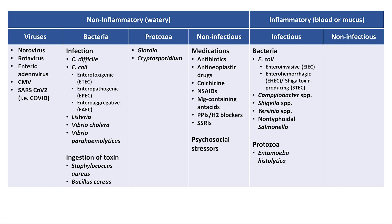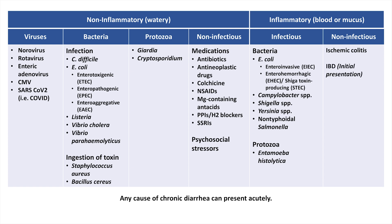Regarding non-infectious inflammatory diarrhea, a relatively uncommon but important cause in hospital medicine is ischemic colitis. It is worth noting that any cause of chronic diarrhea can present acutely, so the entire list of etiologies for chronic diarrhea could be considered as well. However, most causes of chronic diarrhea typically have a gradual onset, such as with most malabsorption syndromes, whereas a relatively rapid onset can be seen with a first presentation of inflammatory bowel disease.